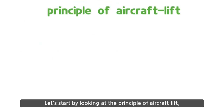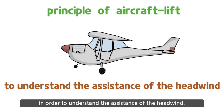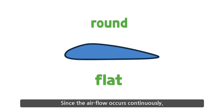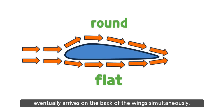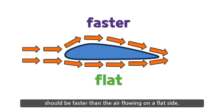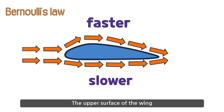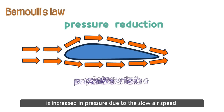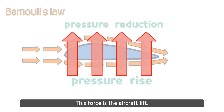Let's start by looking at the principle of aircraft lift, the most necessary force for taking off, in order to understand the assistance of the headwind. The aircraft's wings are flat on the bottom and round on the top. Since airflow occurs continuously, the air that starts at the top and bottom of the wing's front part eventually arrives at the back of the wings simultaneously. This means that air flowing over the round upper surface must be faster than air on the flat lower side. Applying Bernoulli's law, the upper surface is reduced in pressure due to high air speed, and the bottom is increased in pressure due to slow air speed. Since pressure moves from high to low, an upward force is created from the bottom. This force is aircraft lift.